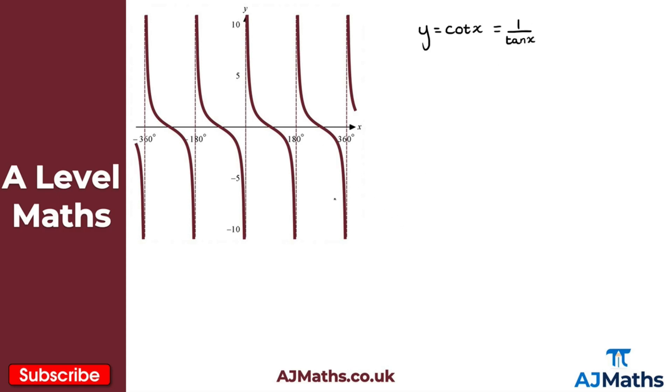So again we're going to have some issues here when tan x is equal to zero. So in that case the asymptotes here, like you can see, are at x equals minus 360 degrees, minus 108 degrees, 0 degrees, 108 degrees, and then finally 360 degrees.